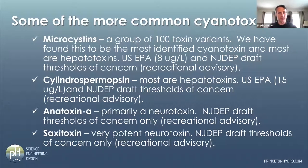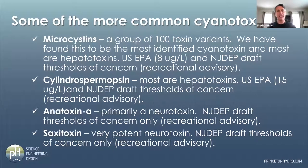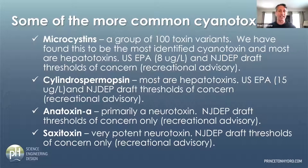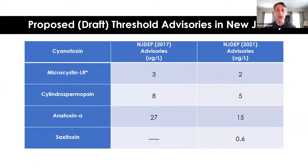Cylindrospermopsin and microcystin are the two that EPA recognizes right now. New Jersey has recreational advisories for two others: anatoxin A and saxitoxin. Anatoxin A is a neurotoxin — EPA is working on their recommended threshold, but New Jersey DEP already has one. Saxitoxin DEP just posted this year — it's a very potent neurotoxin. It tends to show up more in marine or estuarine systems; red tides and paralytic shellfish poisoning are typically associated with saxitoxin.